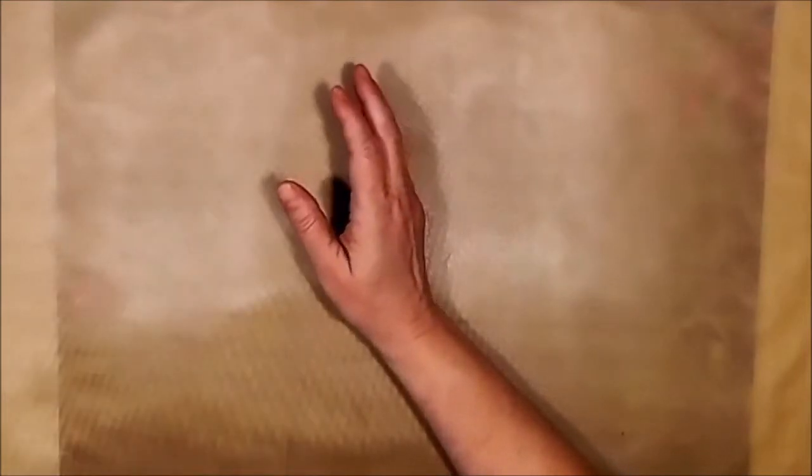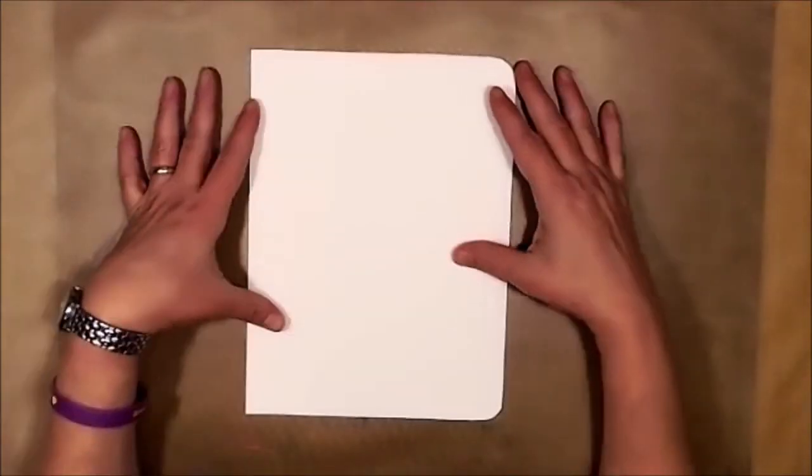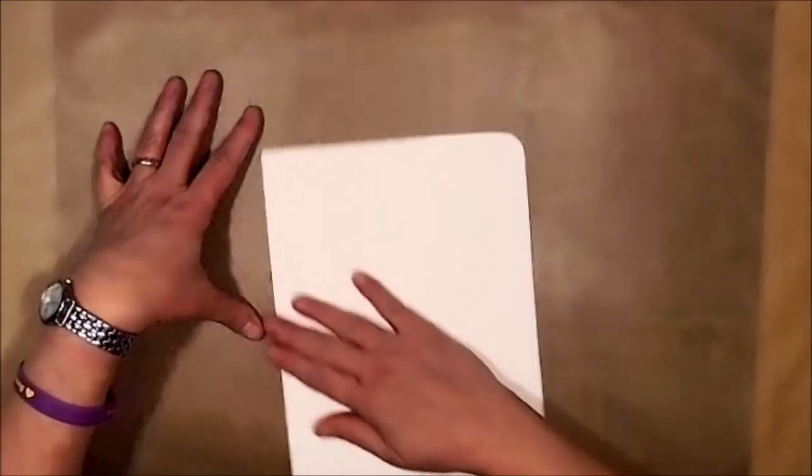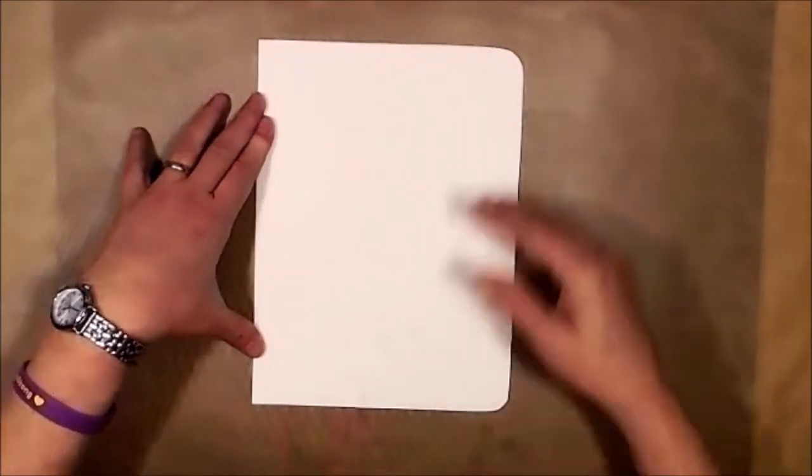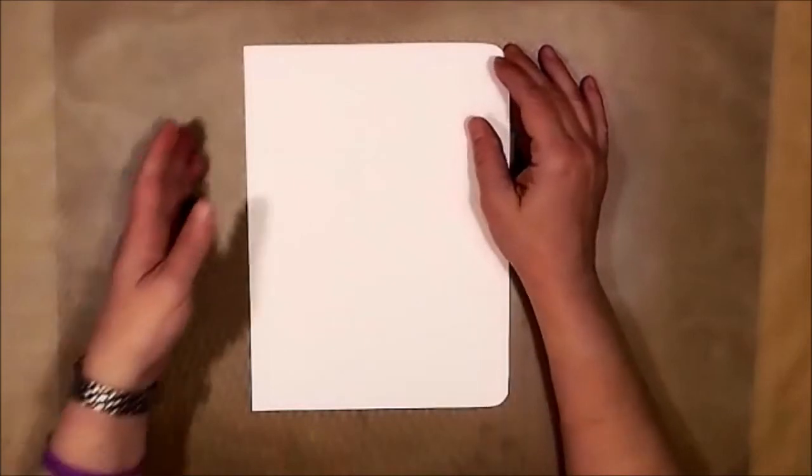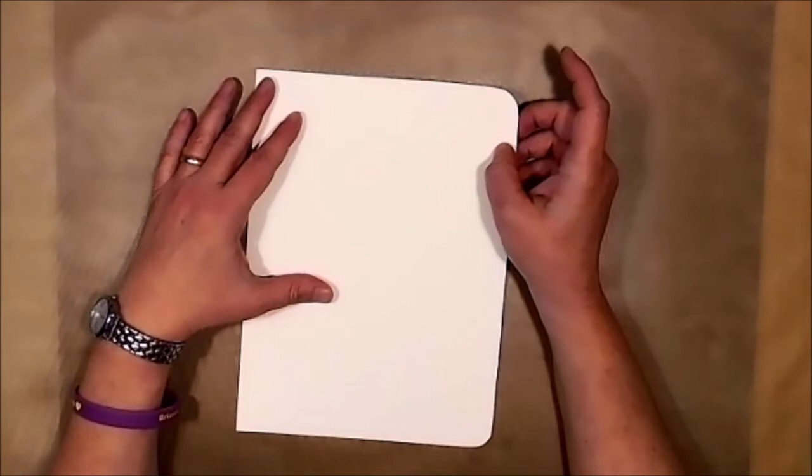I started out with a sheet just like this. This is by Canson, 140 pound watercolor paper. I do all my pages on this, and then I glue them into what are they called, a journal. They're not really journals, I make them into journals, but they're notebooks basically.